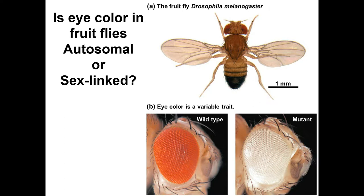Now we'll talk about sex-linked traits — specifically eye color in fruit flies. Eye color in fruit flies is a sex-linked trait. The wild type phenotype — if you were to look at fruit flies in the population — most would have red eyes. A mutant phenotype would be white eyes.